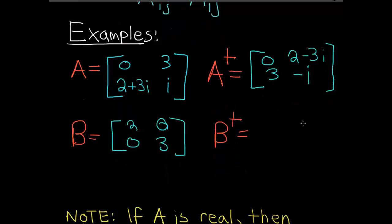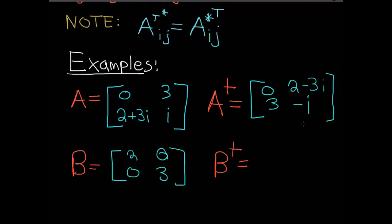We've got to do both of those operations. And matrix B, similarly, is just 2, 3, 0, 0 — it's the same as it was. B is equal to B Hermitian conjugated.